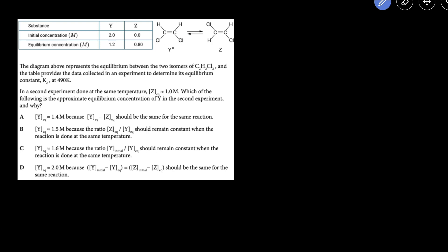In this problem we're given the reaction Y becomes Z. We're also given a table that contains the initial and the equilibrium concentrations of Y and Z. And we're told that the experiment's goal is to determine the equilibrium constant. Then we're told that a second experiment is ran in which the equilibrium concentration of Z is 1, and is asking which of these statements is true indicating the proper concentration of Y at equilibrium in this second experiment.